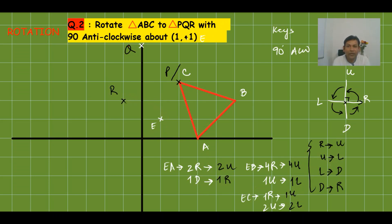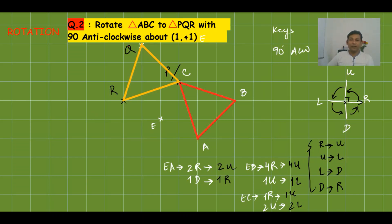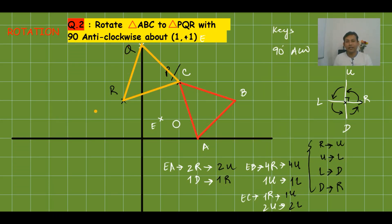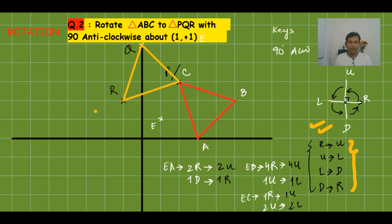Joining the three image coordinates gives triangle PQR. Triangle ABC has been mapped onto triangle PQR by 90° anticlockwise rotation about (1, 1). Using the keys method, you don't need a compass or scale — just count steps and apply the directional keys to get the answer. Now moving to Question 3.